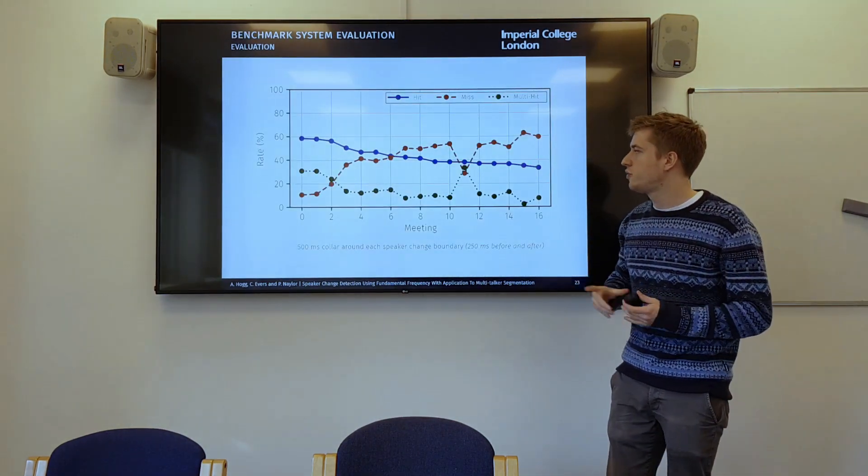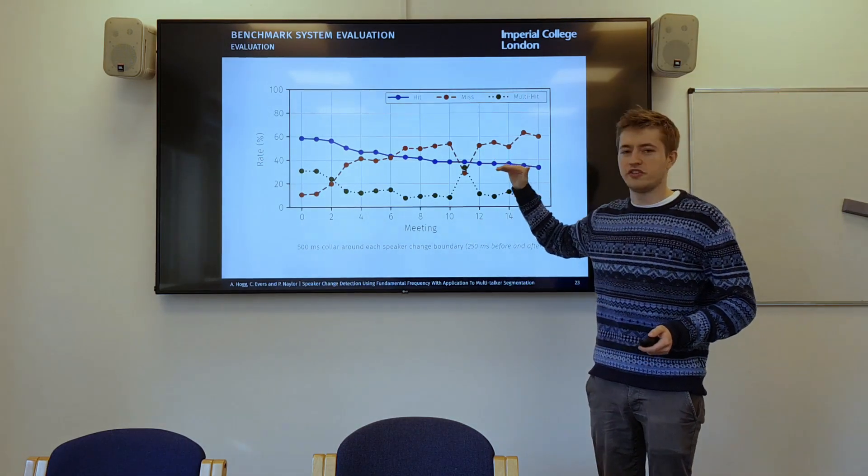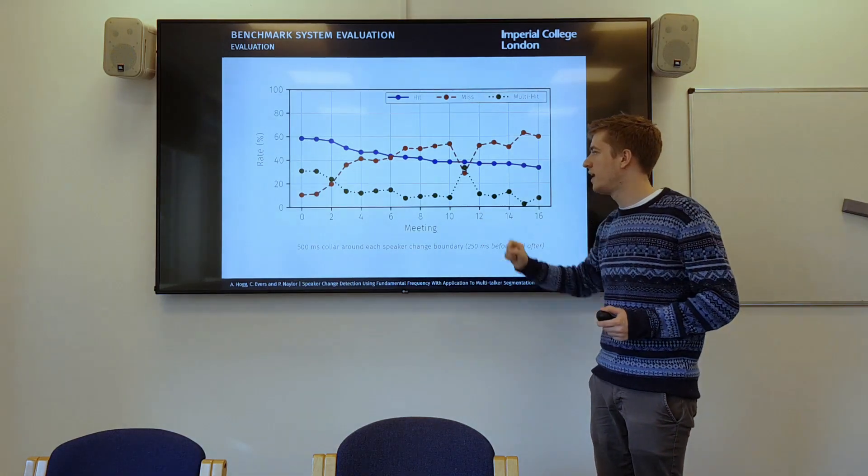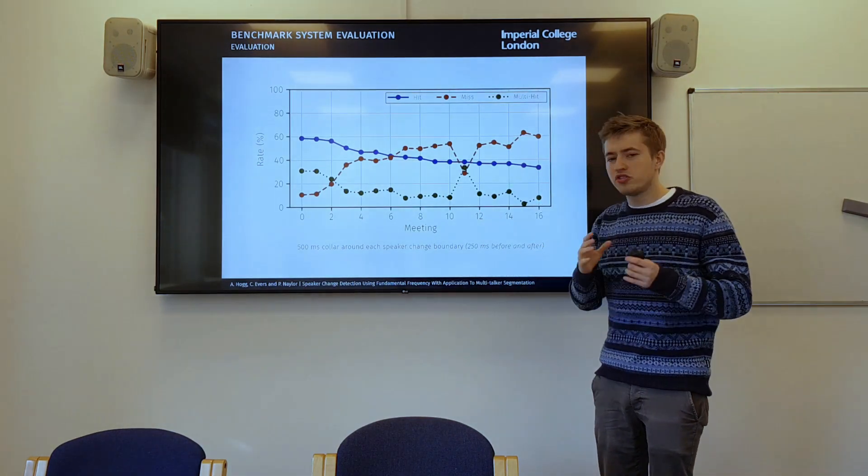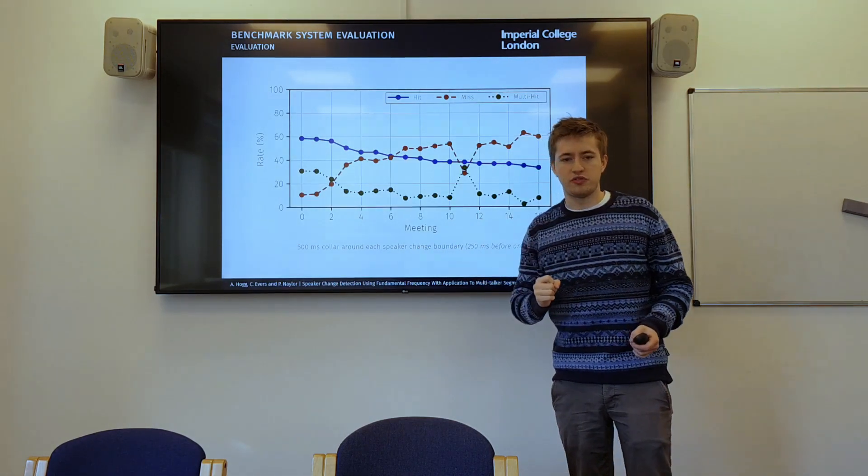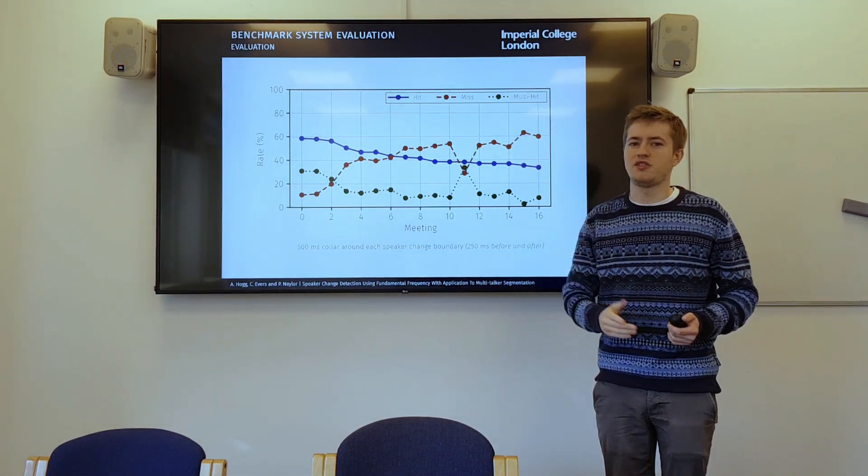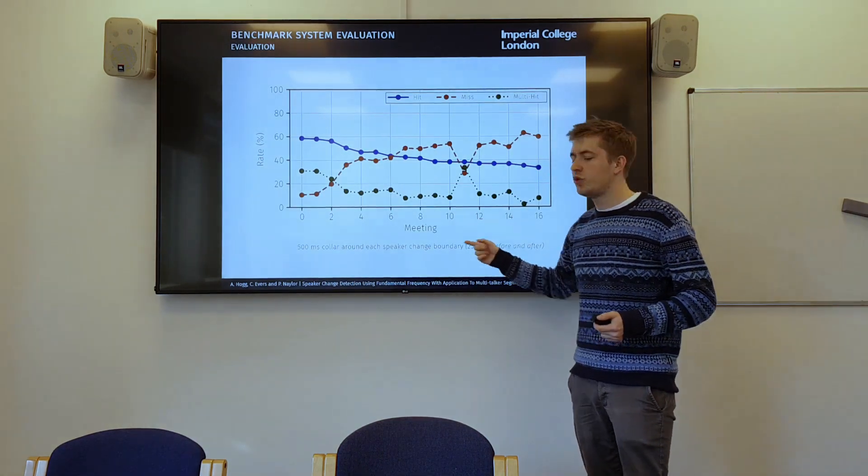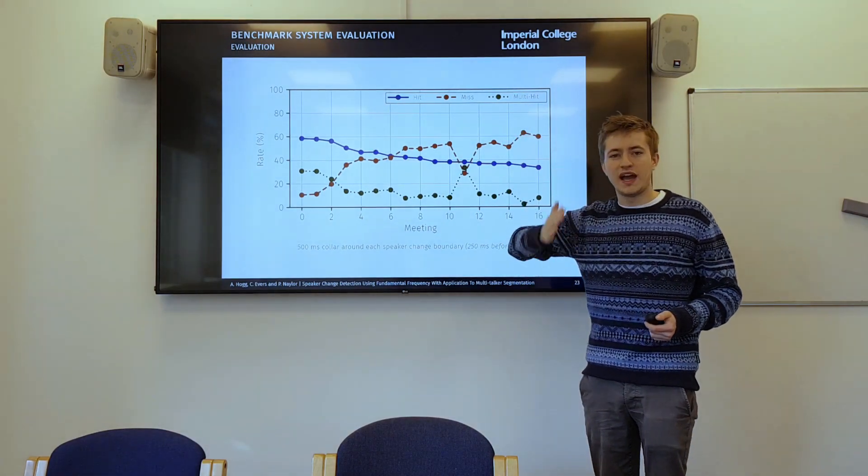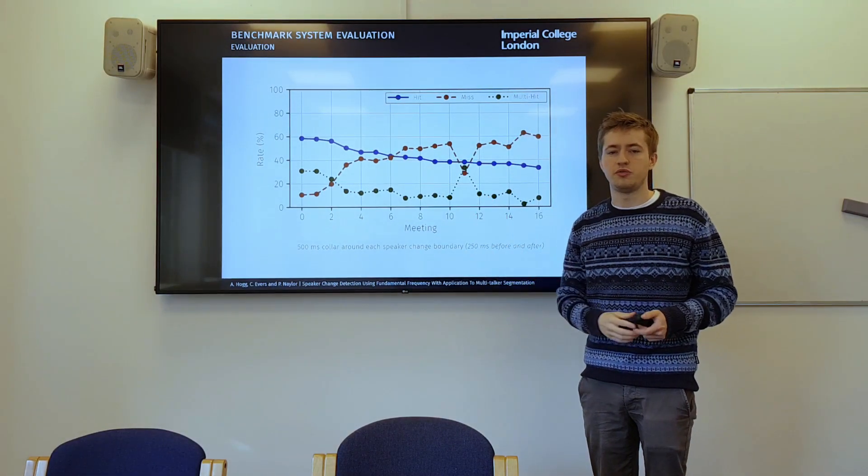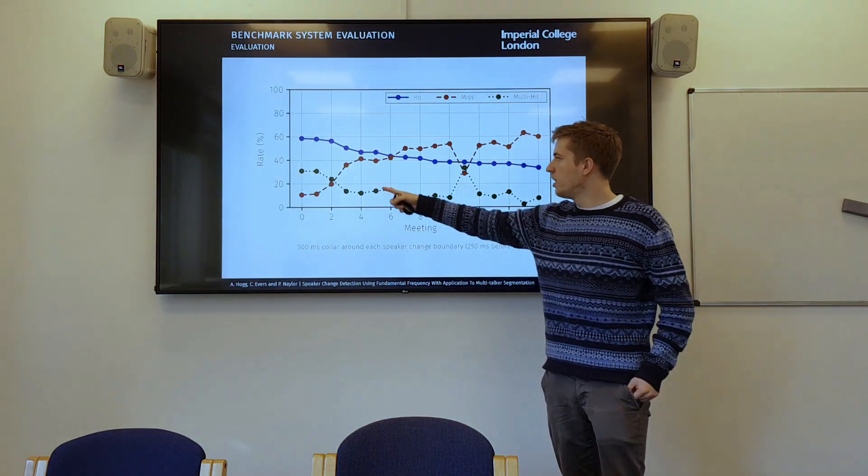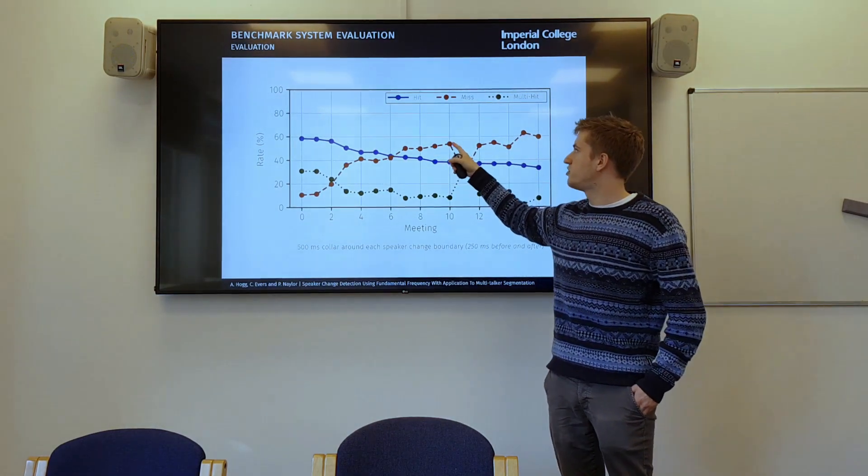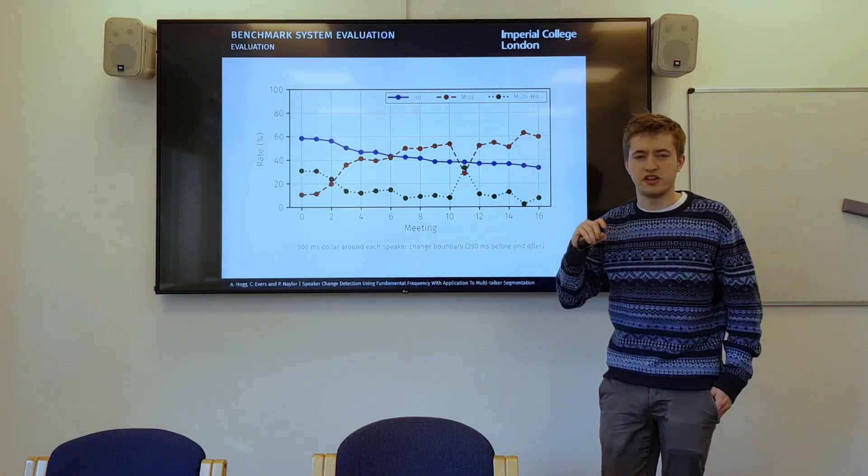So how well do we do? If we look at the baseline, we have three things that we need to look at. We need to look at how often do we hit, so how often do we detect a speaker change? How often do we miss a speaker change? And then because it's common in the literature to put a collar around the speaker change, because we're never going to get frame accuracy with our speaker changes, even the labels that we're using from the AMI corpus are not going to be frame accurate. We have a collar, and that's why we have multi-hits, because we can hit speaker changes multiple times, we detect them in the collar multiple times. So as you can see, the hit rate never really gets above 60% with the MFCC method. In fact, you have a very large miss rate, almost 60% in this particular meeting.